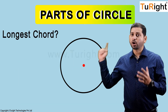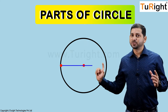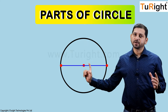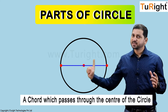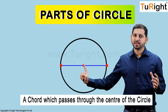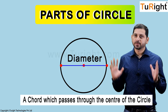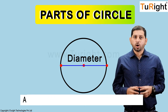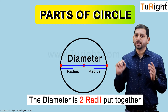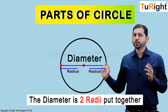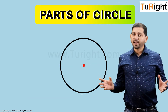As you can see, a chord can have many different lengths. Can you guess which is the longest chord? It is the one which passes through the center. A chord which passes through the center is called a diameter.